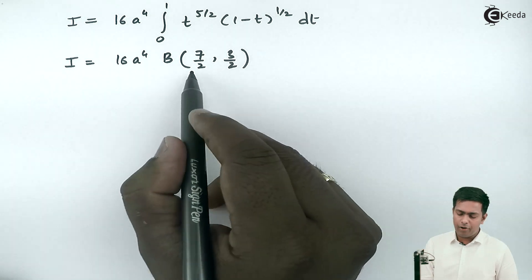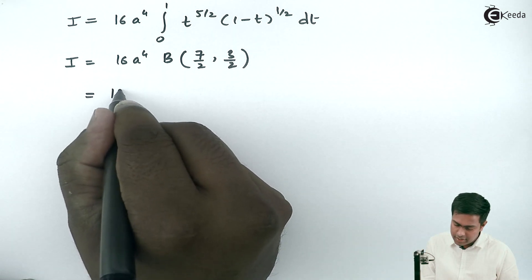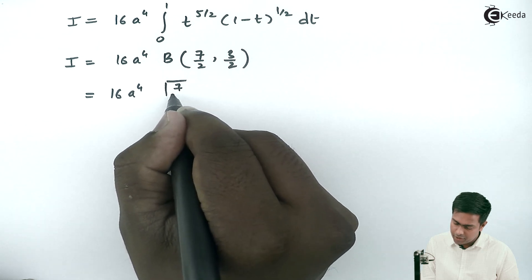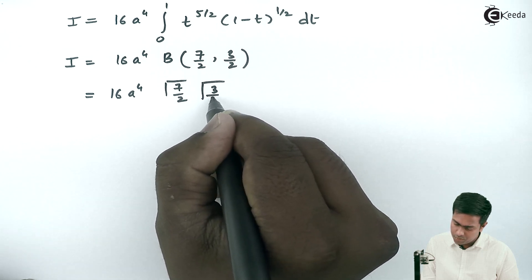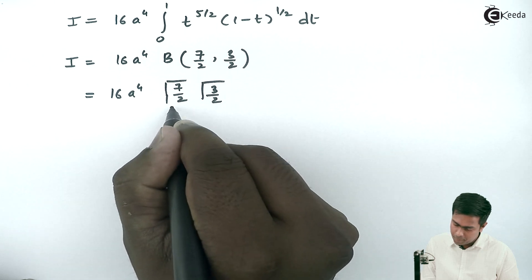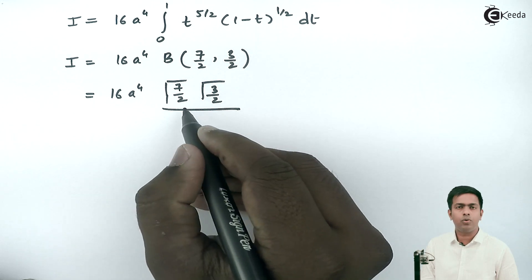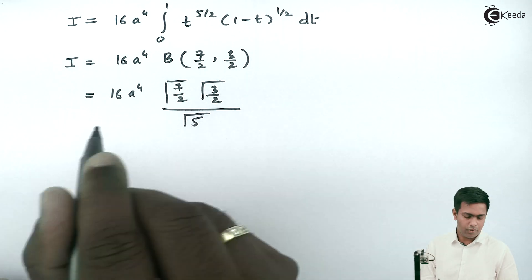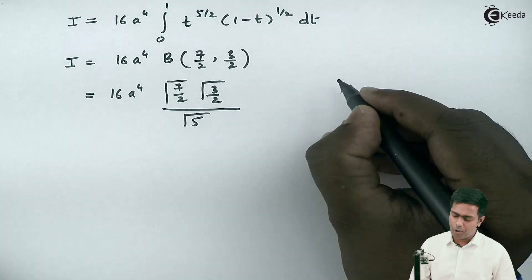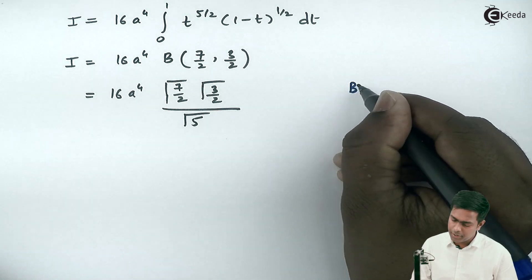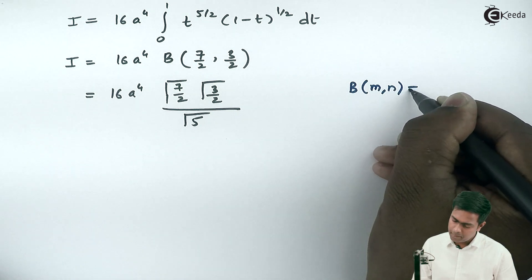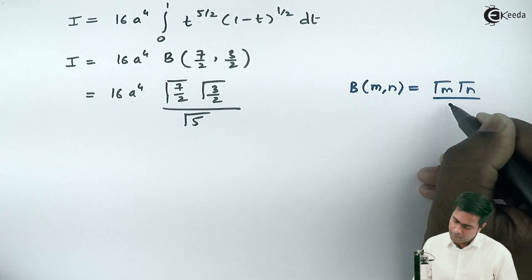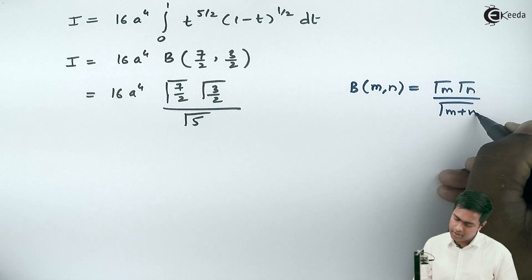By evaluating this we get 16a raised to 4 times gamma(7/2) times gamma(3/2) divided by gamma(7/2 + 3/2), which is gamma(10/2), that is gamma(5). Here I am using the property that beta(m, n) equals gamma(m) times gamma(n) divided by gamma(m + n).